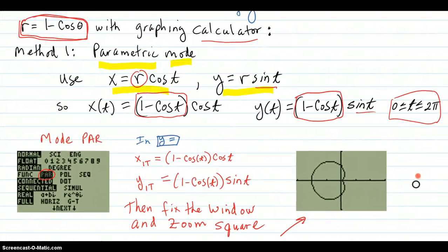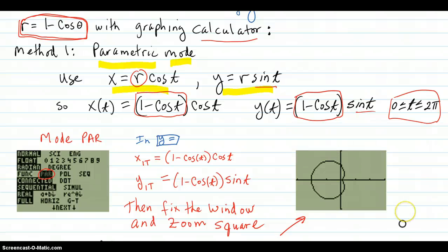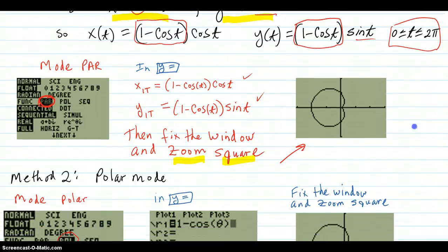So then to graph it on your calculator, you need to go to mode and select the parameter there. Then in y equals, you get an x1t and a y1t that show up. And you type in what those equations were. You fix a window to show the area, the region you want to show. And then you put zoom square, so that the tick marks are equal, so it won't be bent out of shape. There's your cardioid pattern.